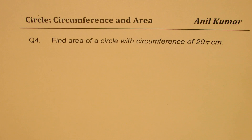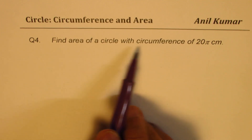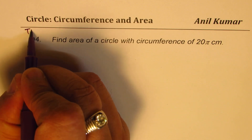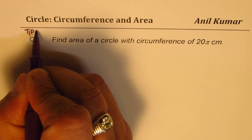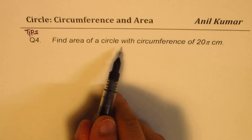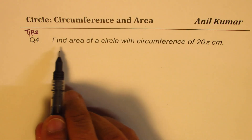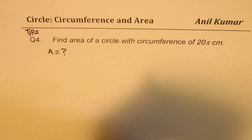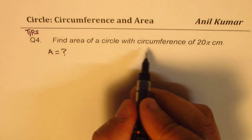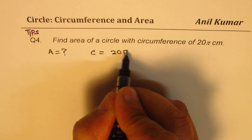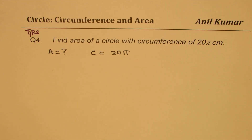Question number four: find area of a circle with circumference of 20π centimeters. As I said, these are thinking questions. We are given circumference equal to 20π, and we need to find area.